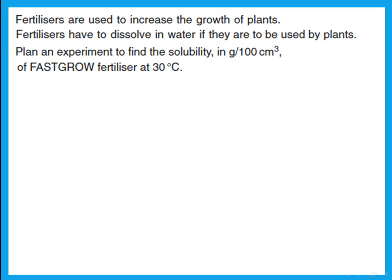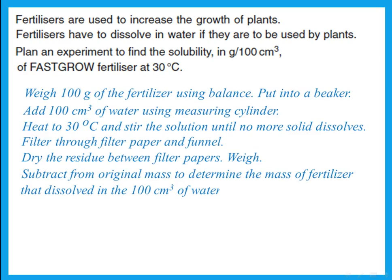Here is a question: fertilizers are used to increase plant growth and must dissolve in water to be used by plants. Plan an experiment to find the solubility, in grams per 100 cm³, of a fertilizer called 'Fast Grow' at 30°C. We are given a fertilizer and need to find how much dissolves in 100 cm³ of water at 30 degrees Celsius. First, weigh a known amount of fertilizer — for example, 100 grams — using a balance.